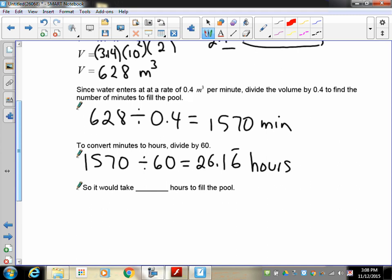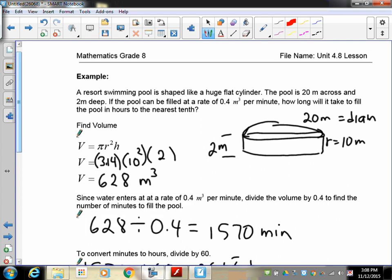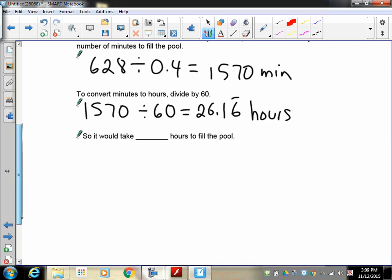Now, it says to round it off to the nearest, up here, nearest tenth. So I mean, that means one decimal place. So remember, this is actually 26.16666 to round it off to the nearest tenth. That's one decimal place. So there's our cutoff.